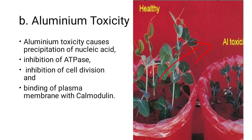Aluminium toxicity also causes inhibition of ATPase enzyme activity, inhibition of cell division so new cells cannot form, and binding of the plasma membrane with calmodulin. These are the major problems caused when aluminium is in excess in the plant.